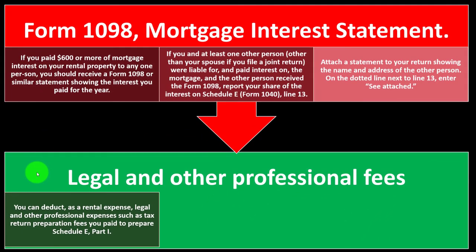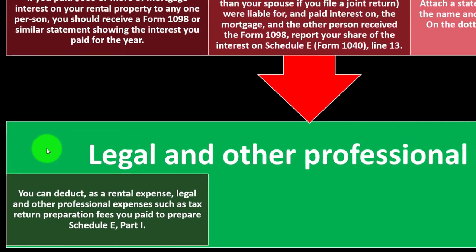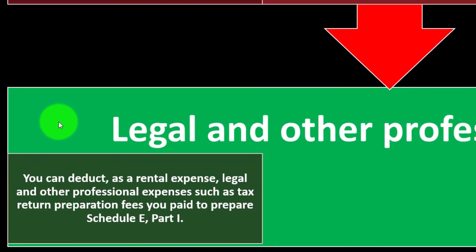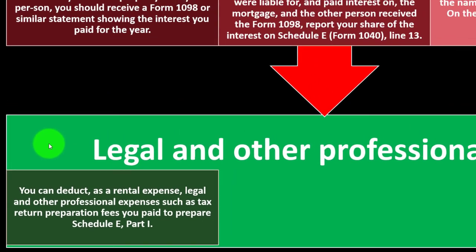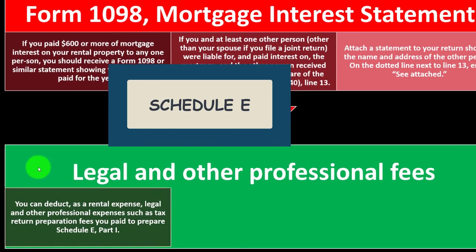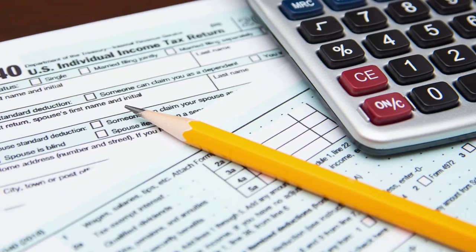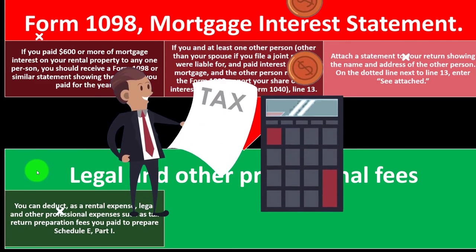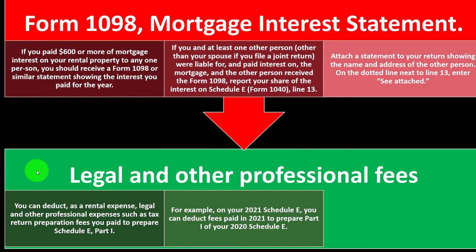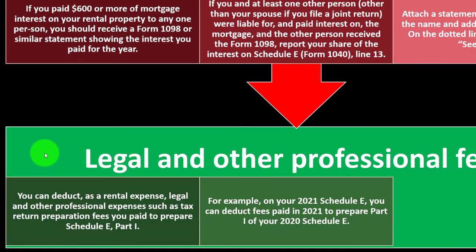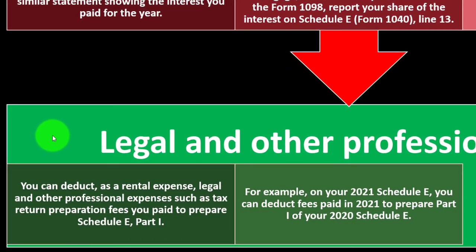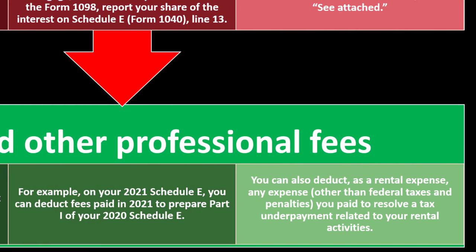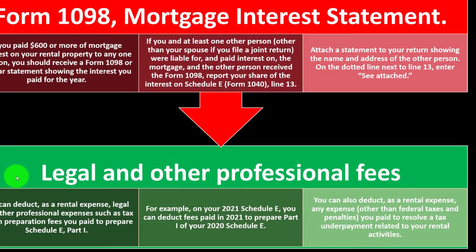Legal and other professional fees: you can deduct as rental expenses legal and other professional expenses, such as tax return preparation fees you pay to prepare your Schedule E Part 1. On your 2021 Schedule E, you can deduct fees paid in 2021 to prepare Part 1 of your 2020 Schedule E. You can also deduct any expense — other than federal taxes and penalties — you paid to resolve a tax underpayment related to your rental activities.